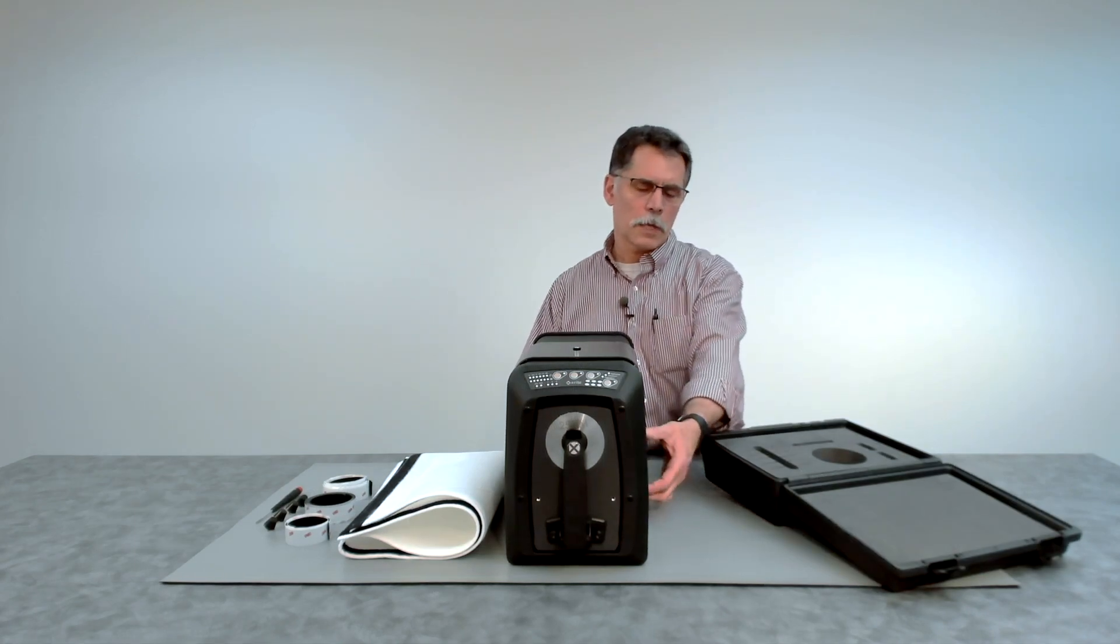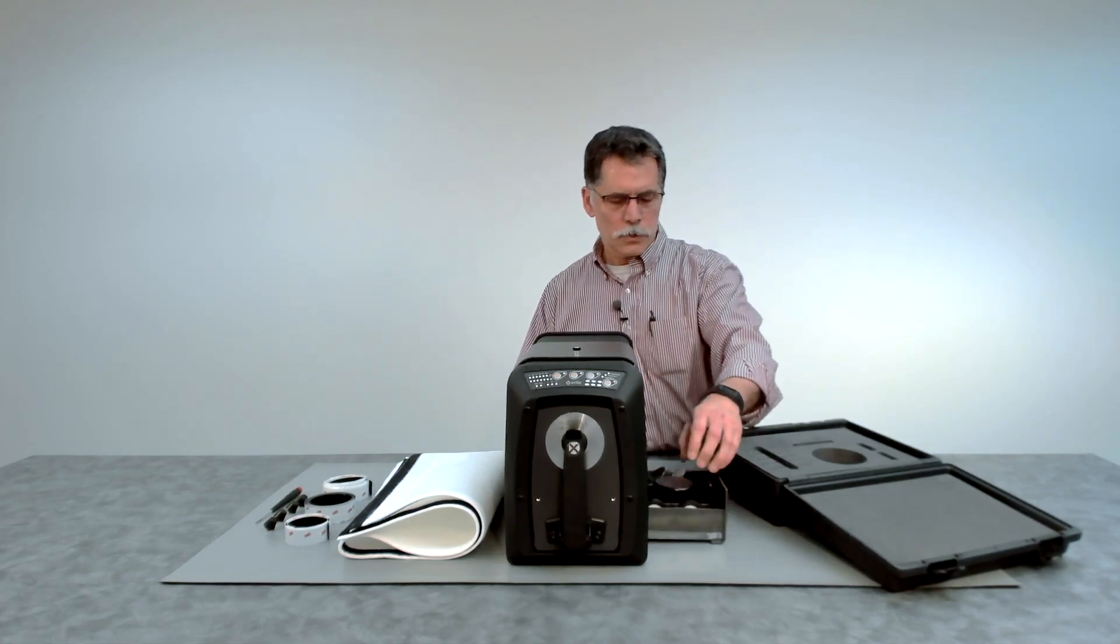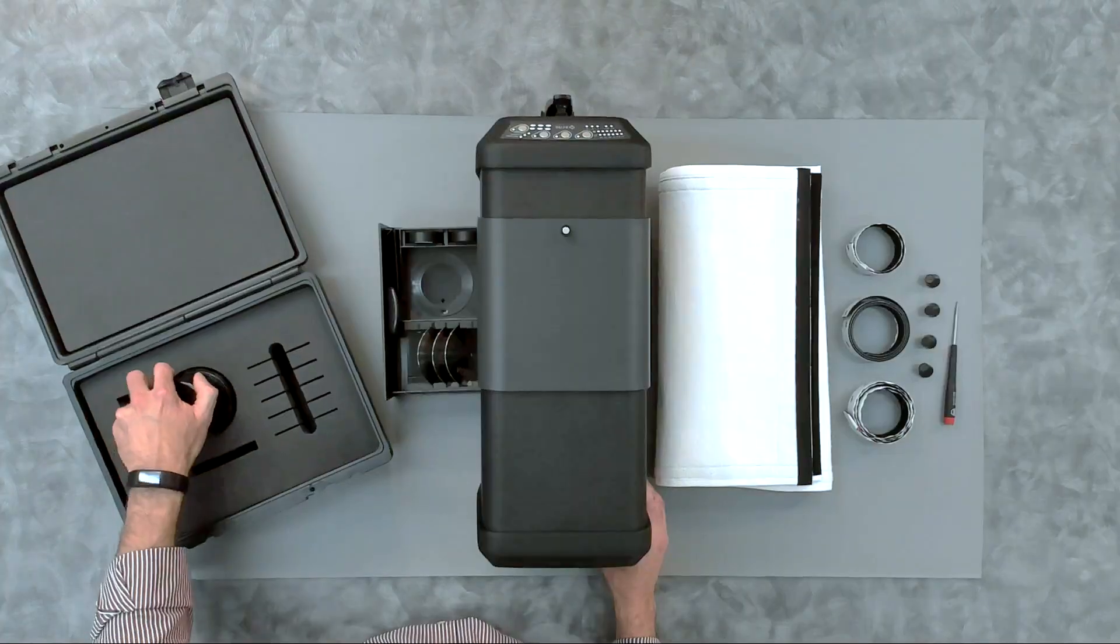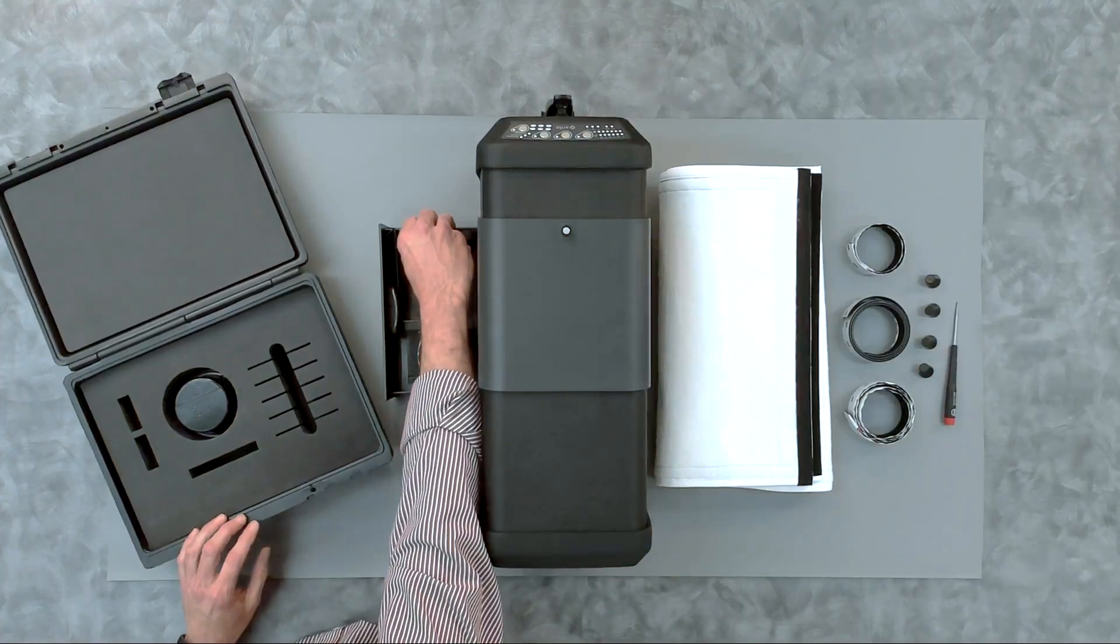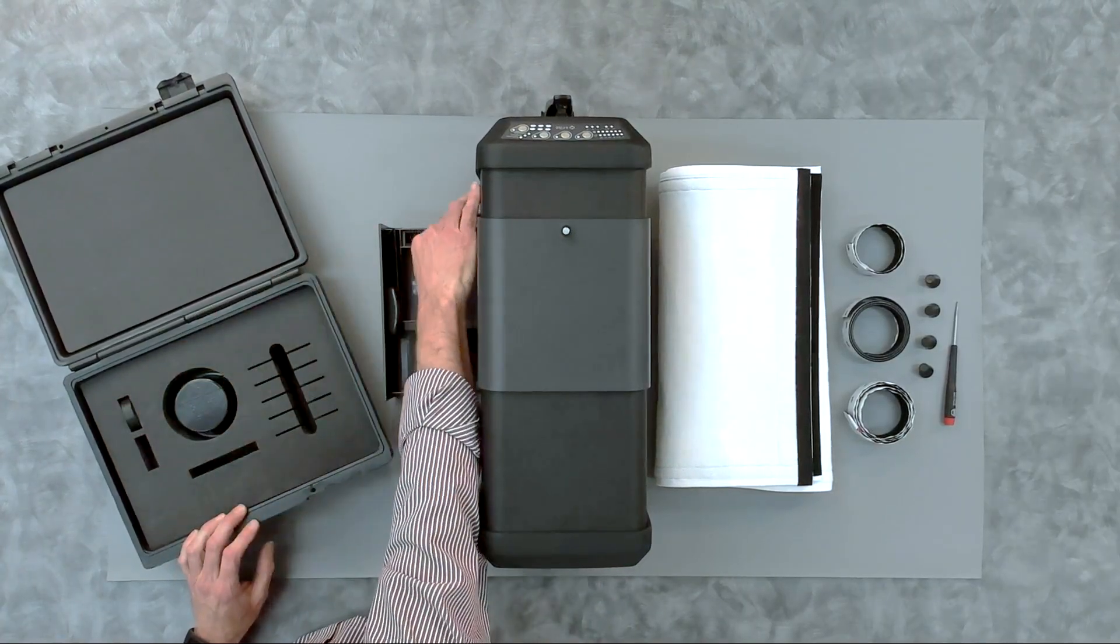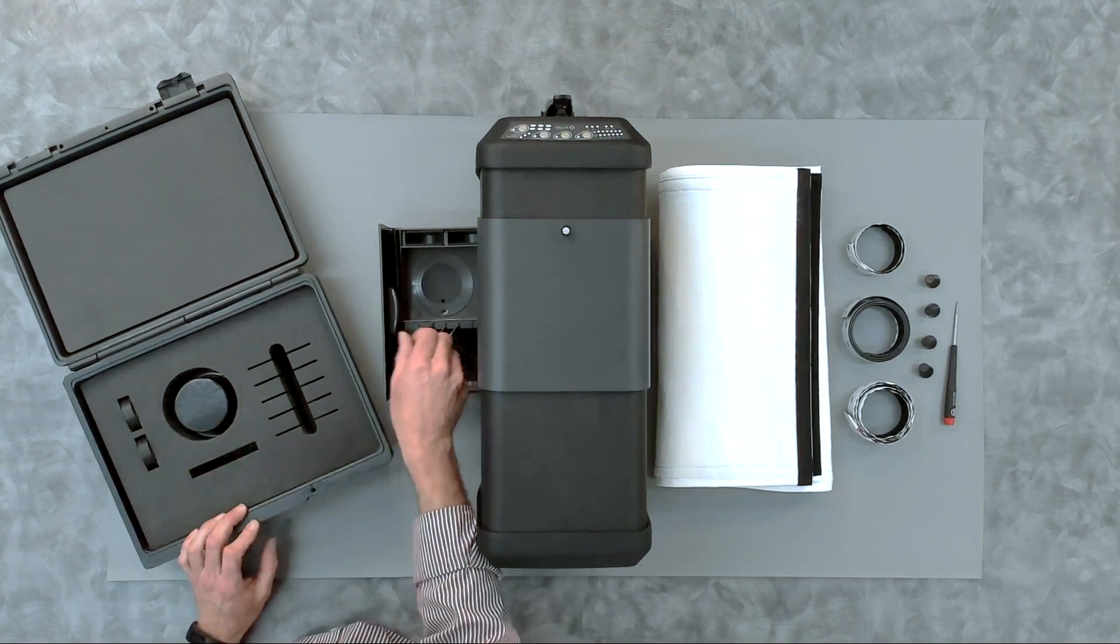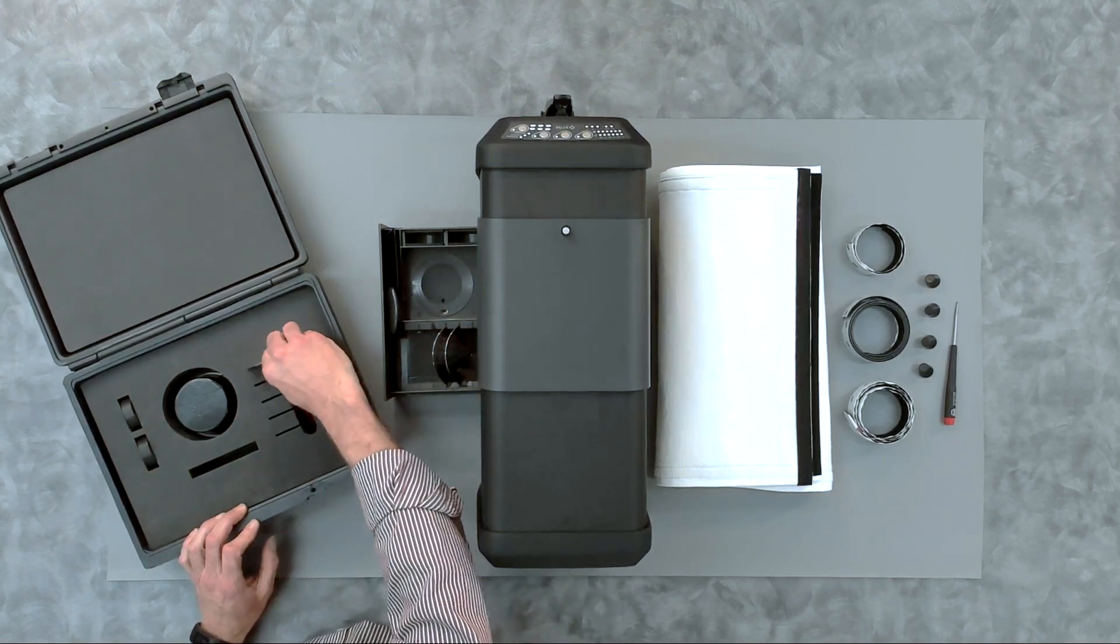The first step in installing the X-Rite Benchtop Filter Kit is to empty the accessory drawer. Calibration media and aperture plates are put into the separate case that's provided.